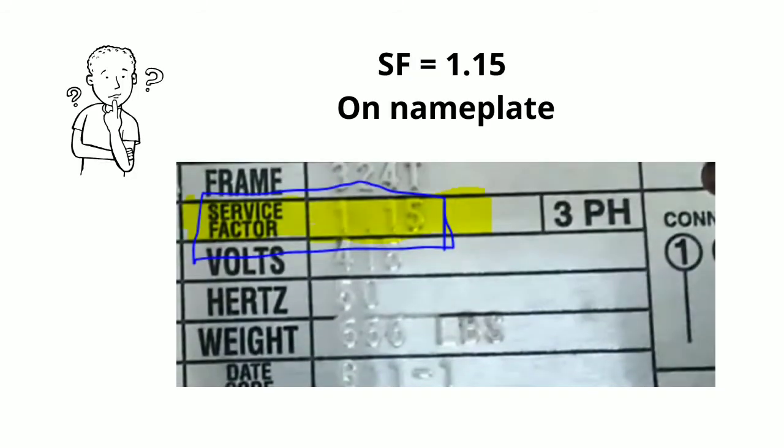Each motor nameplate should have a service factor value of the motor. In this nameplate, the motor service factor is 1.15. What does this mean?